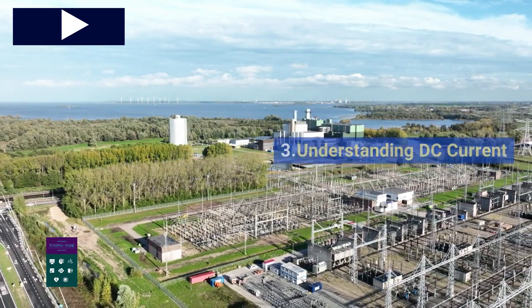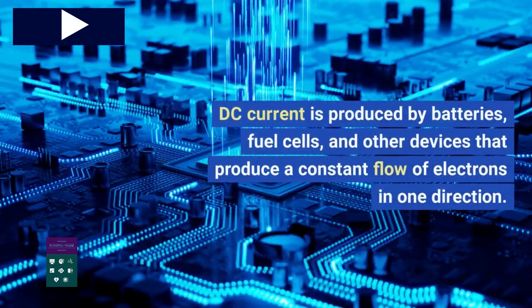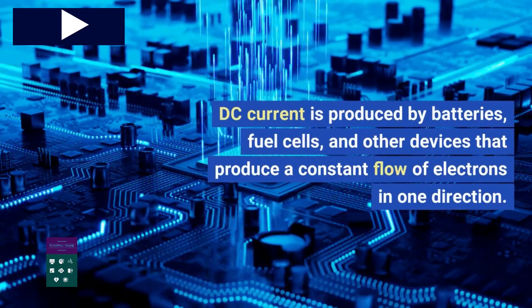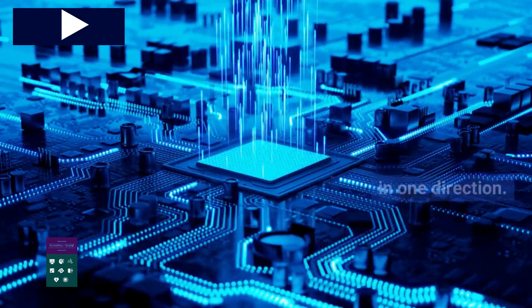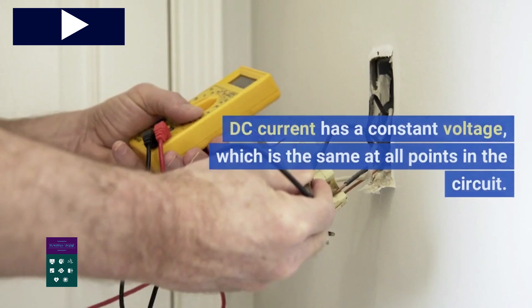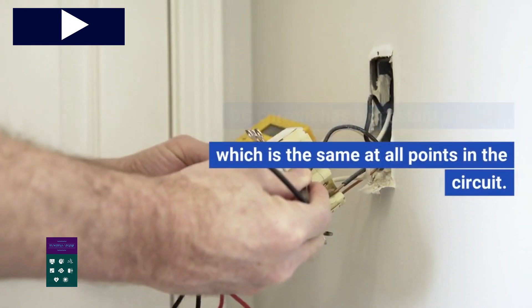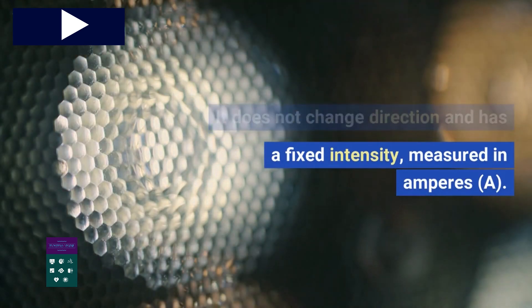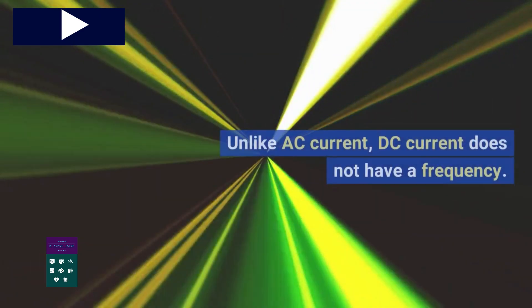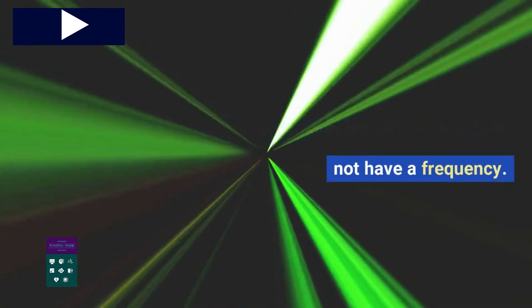DC current is produced by batteries, fuel cells, and other devices that produce a constant flow of electrons in one direction. DC current has a constant voltage, which is the same at all points in the circuit. It does not change direction and has a fixed intensity, measured in amperes. Unlike AC current, DC current does not have a frequency.